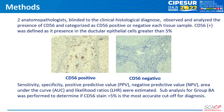CD56 positive was defined as presence greater than 5% in the ductal or epithelial cells. Sensitivity, specificity, positive predictive value, negative predictive value, area under the curve, and likelihood ratios were estimated. A sub-analysis for the BA group was performed to determine if CD56 staining graded at 5% is the most accurate cutoff for diagnosis.